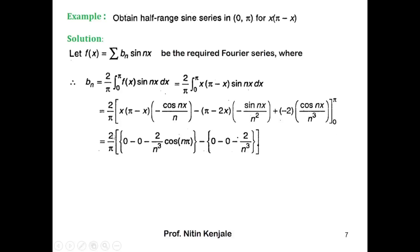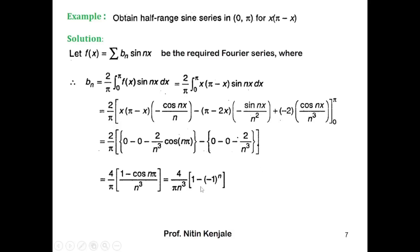Substituting the limits: when x equals π, (π − π) is 0, so 0 times anything is 0. Then (π − 2π) is minus π, times minus sin(nπ) — but sin(nπ) is 0, so that term is 0. Then minus 2 times cos(nπ)/n³ at x equals π. When x equals 0, the terms similarly reduce, and minus 2 times cos(0)/n³ gives minus 2 times 1/n³. Simplifying, we get b_n equals 4/π times (1 − cos(nπ))/n³.